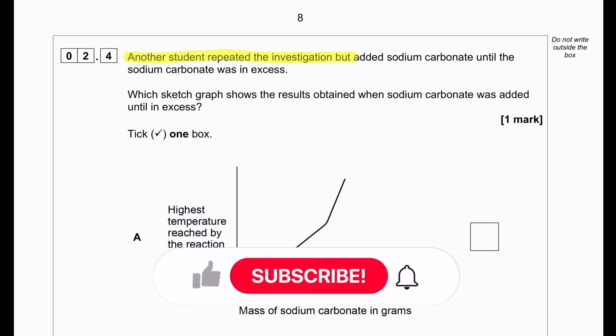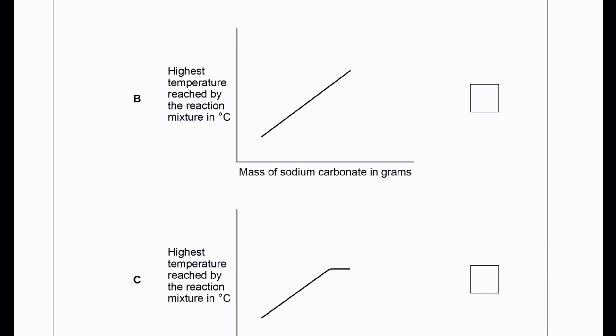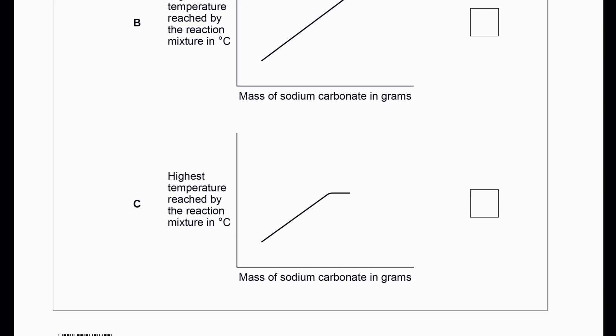Another student repeated the investigation but added sodium carbonate until the sodium carbonate was in excess. Which sketch graph shows the results obtained when sodium carbonate was added until excess? If we add sodium carbonate until excess, our temperature increase will plateau, so C should be the answer.